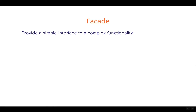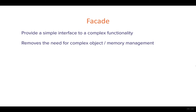The facade is basically an interface, or more generally an object or several classes, that can provide you some functionality to access more complex functionality in the background. It removes the need for complex object and memory management — you don't know what's going on in the background, you just care about the result. In the Retrofit example, you don't care what objects or classes it creates. It also simplifies the client implementation, letting you just interface with the facade that is provided.